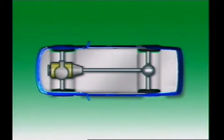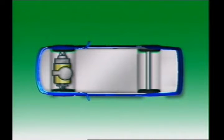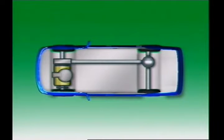In four-wheel drive applications, a front-mounted engine can drive both the front and rear wheels. Alternatively, the engine can be transverse and drive either the front wheels only, or in four-wheel drive applications, the front and rear wheels.